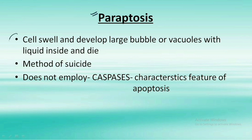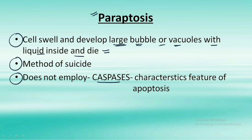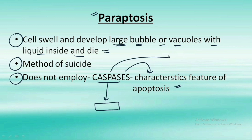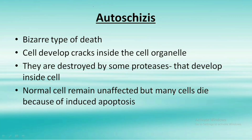The second non-apoptotic PCD is paraptosis. In this type, the cell swells and develops large bubbles or vacuoles with liquid inside, and then dies off. It is also a method of suicide and does not involve caspases, which is a characteristic feature of apoptosis. Caspases are a type of enzyme that play a central role in the mechanism of apoptosis — we'll cover them in detail in the next part.